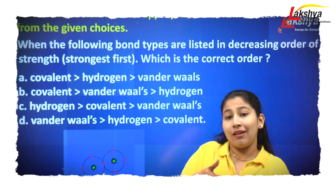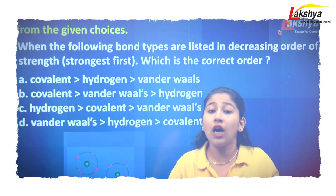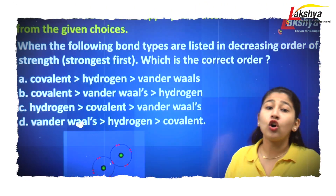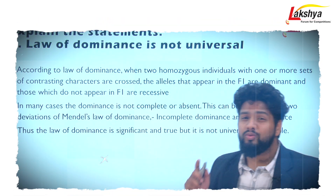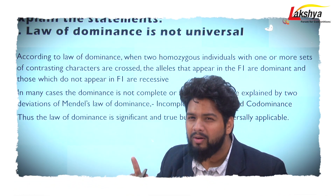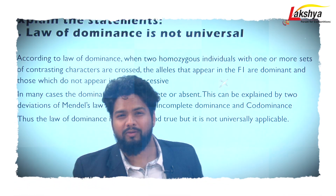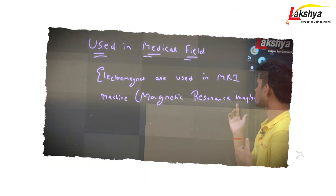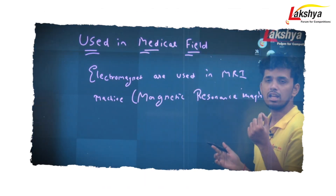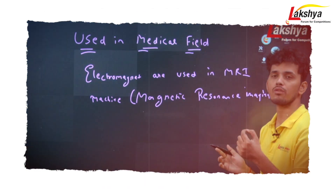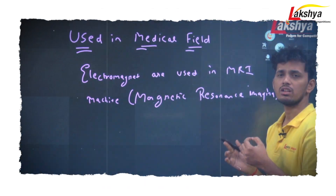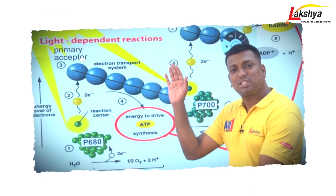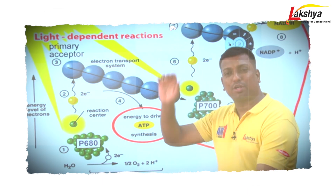Covalent bonding — atoms share their electrons to make a bond, so this is a covalent bond. When two homozygous individuals with one or more sets of contrasting characters are crossed. Resonance imaging is used to scan minute details of your body. Chlorophyll P680 splits water.